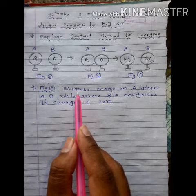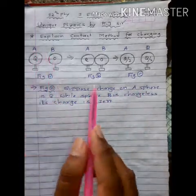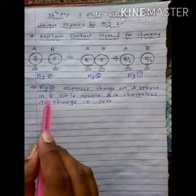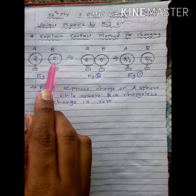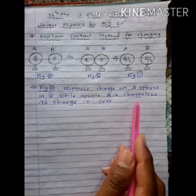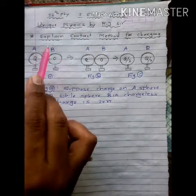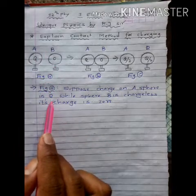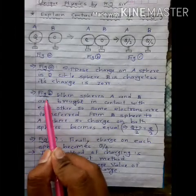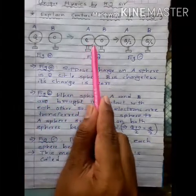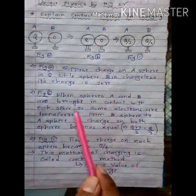Suppose we have two spheres, A and B. The charge on sphere A is capital Q, while the charge on sphere B is zero, because it is a chargeless sphere. This is our initial situation: charge on sphere A is Q and charge on sphere B is zero.